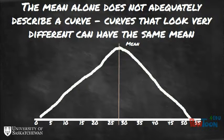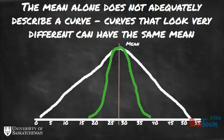The mean alone, however, is not enough to characterize the curve. Two curves that differ greatly in appearance can have the same mean. What differs for these two curves is the variability of the data set, and we characterize this variability with a statistic called the standard deviation.